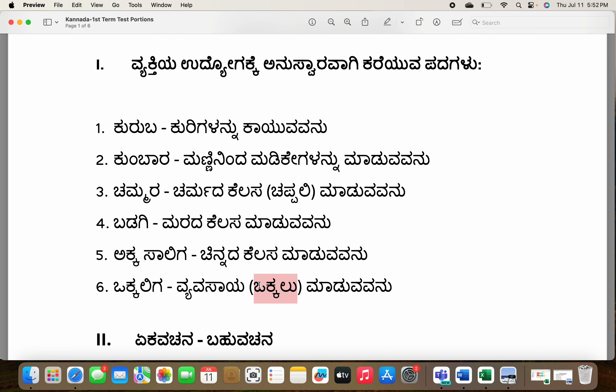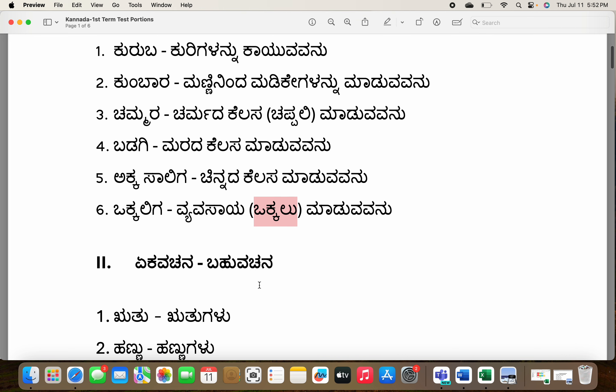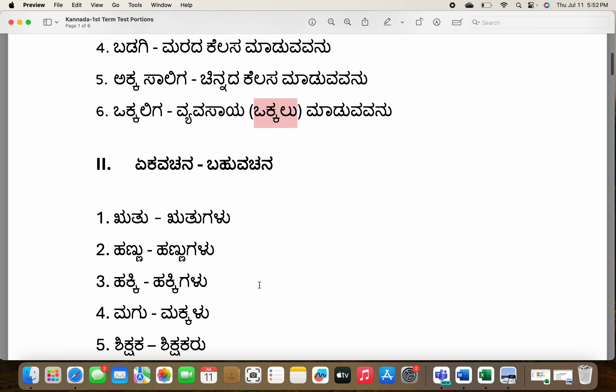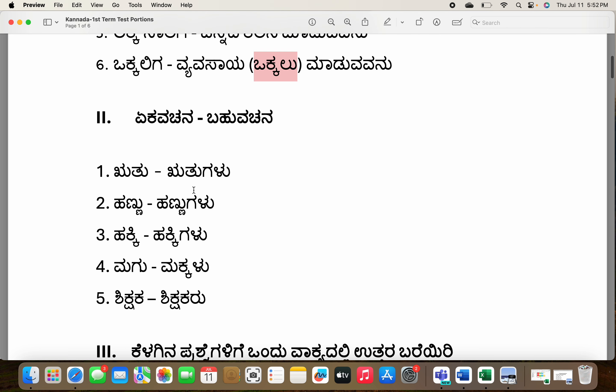Fifth one — okkaliga. What is okkaliga and who are they? Vevasaya madu — okkalu means the person who does work in the field, the farming job. Second section: ekavachana bahuvachana — singular and plural. Very simple.